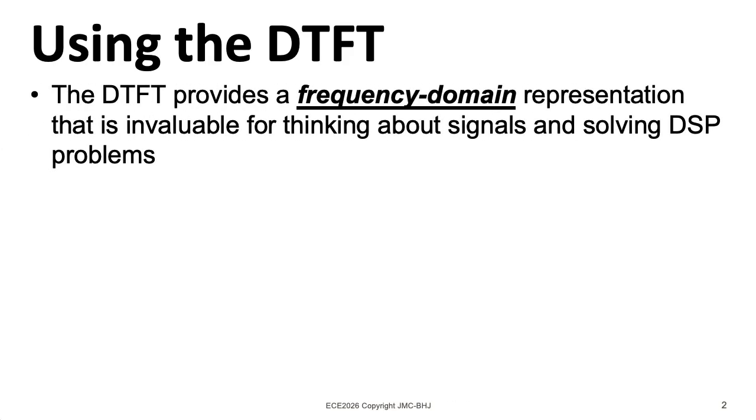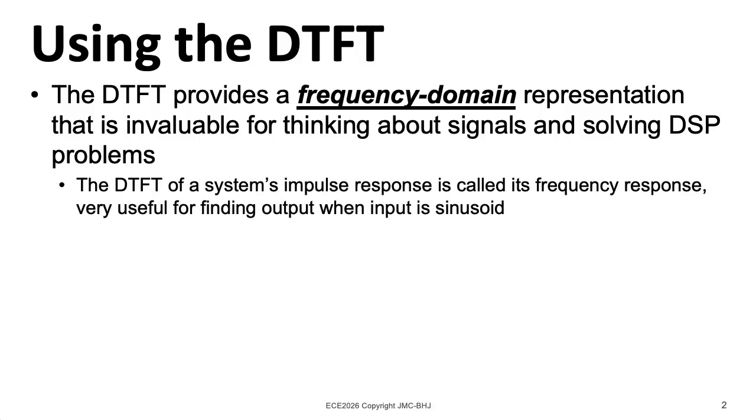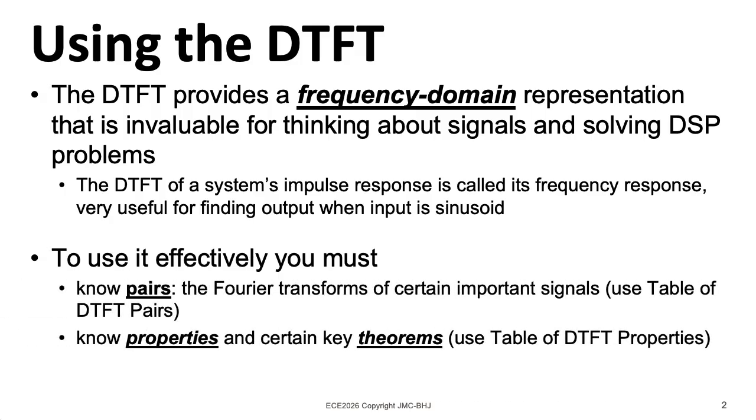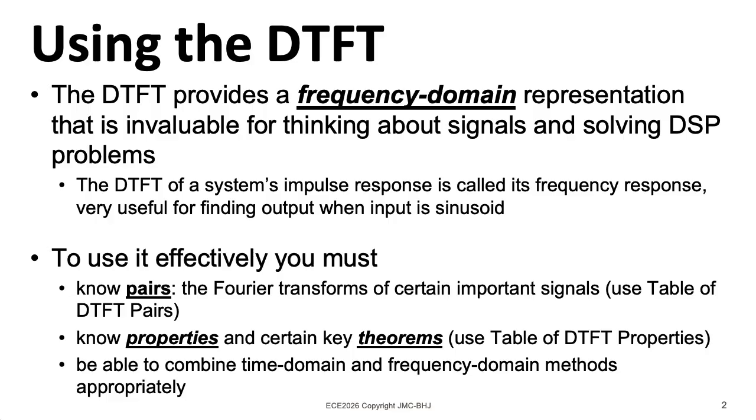The DTFT gives us a frequency domain representation of discrete-time signals. We've seen that if you take the Fourier transform of a system's impulse response, it gives you the frequency response. Now, there's a caveat here in that the DTFT has to exist in the usual sense. In the course of your work, you generally don't have to compute a Fourier transform or an inverse Fourier transform from scratch. Usually, you have a table of pairs and another table with properties, and you can find the transform you need by combining the right pairs with the right properties. You need to be able to effectively move back and forth between the time domain and the frequency domain to answer whatever question you need answered.